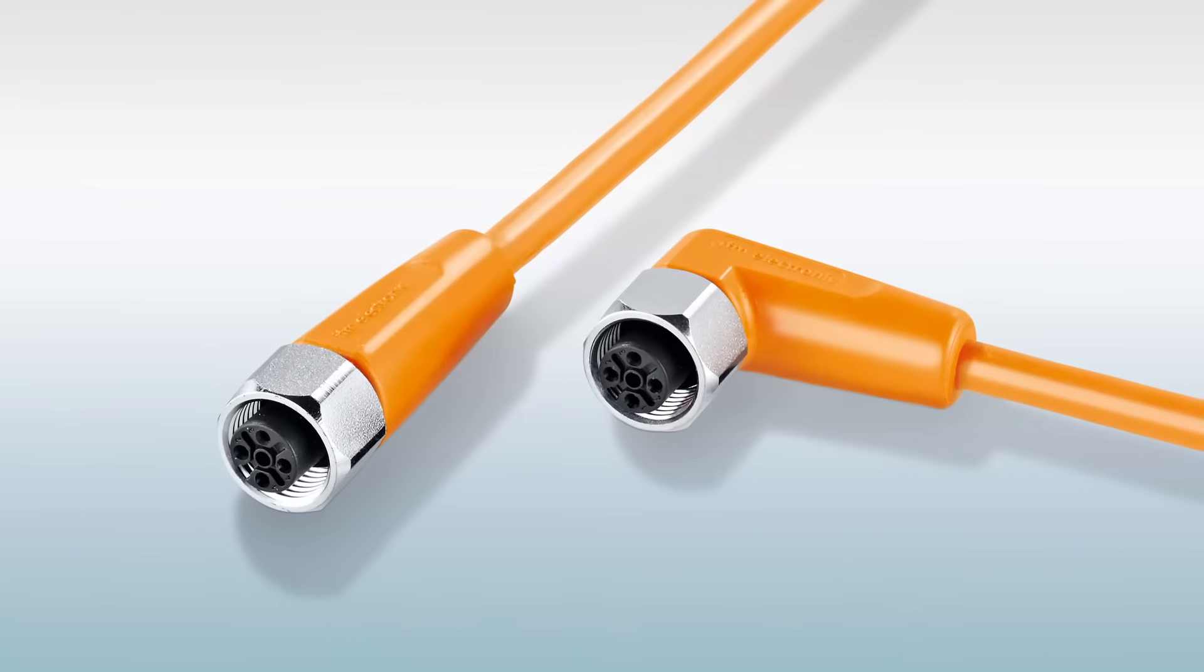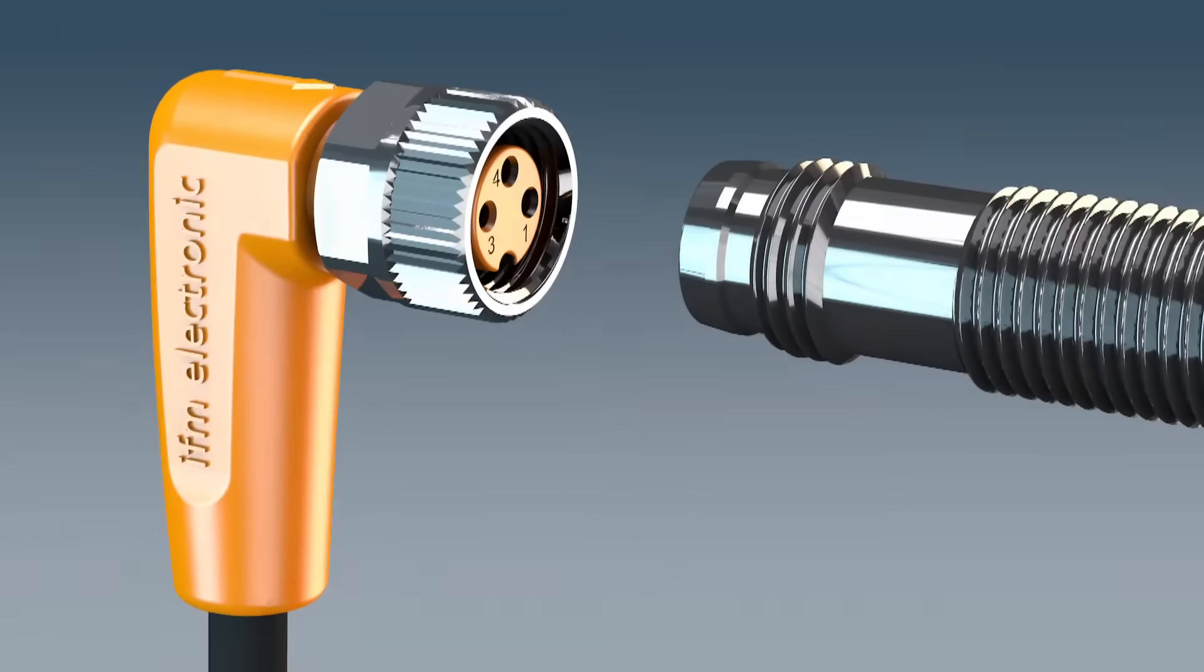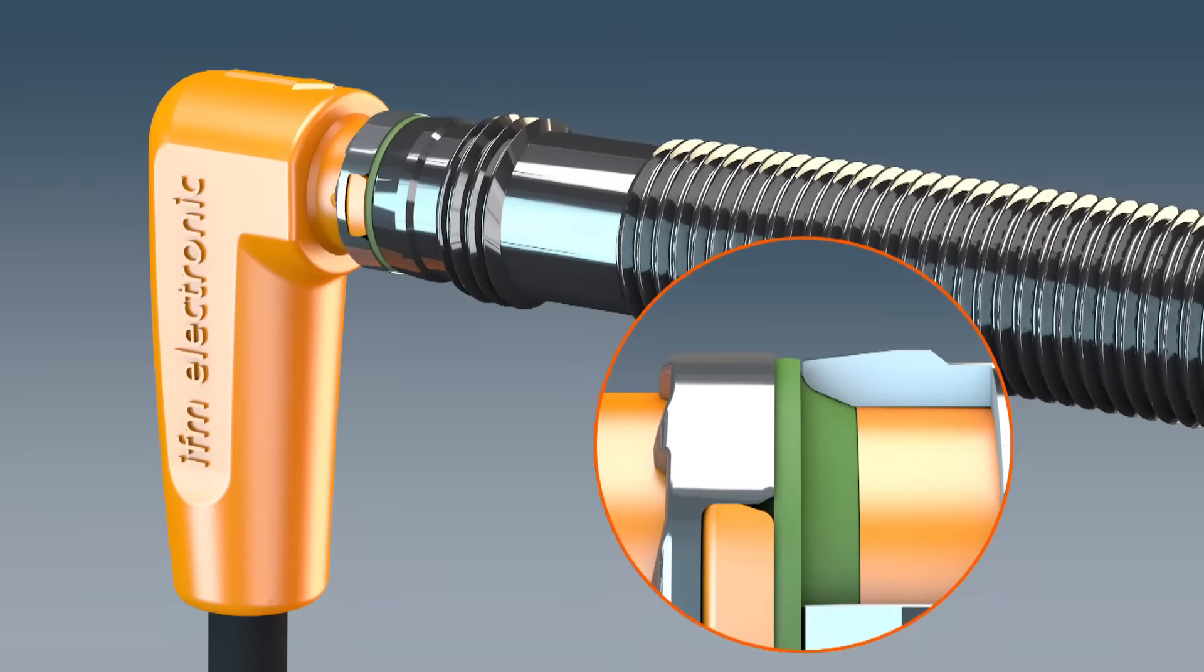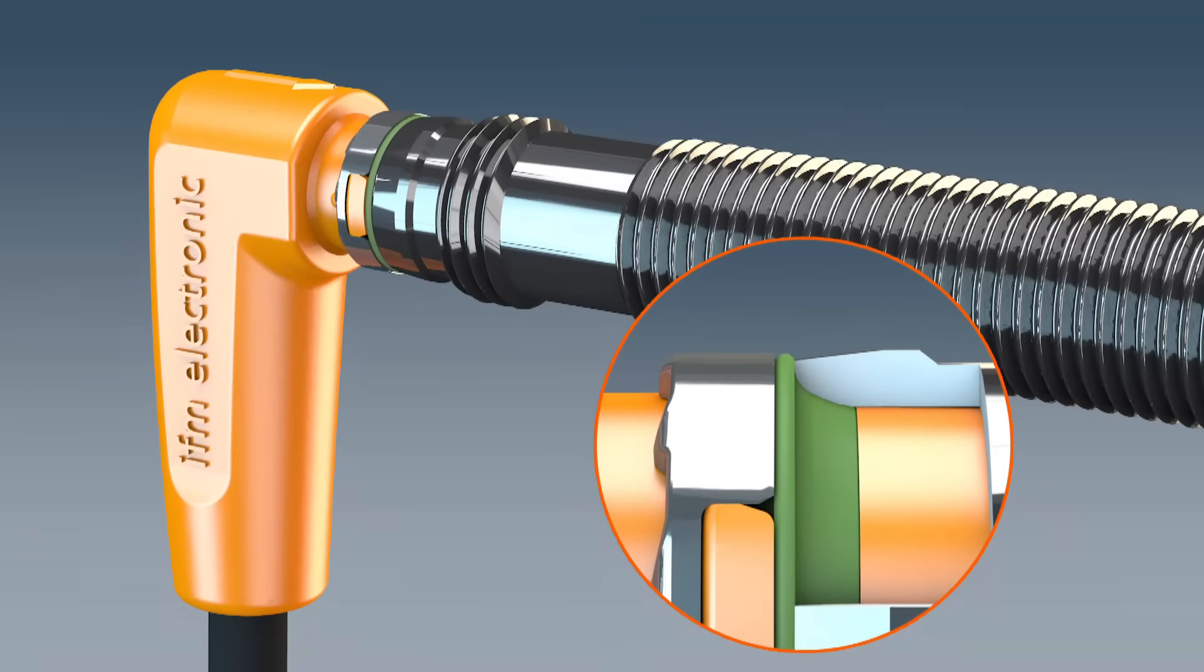With the innovative profiled sealing ring, Ecolink M8 connectors have reached protection rating IP67, IP68 and IP69K for the first time.